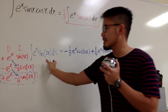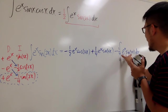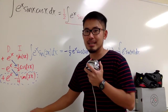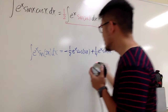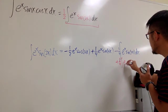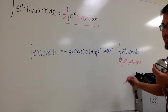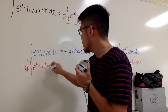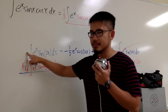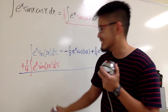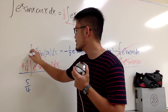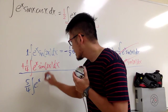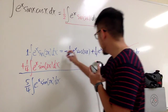That integral part repeats, so I'm going to add 1 over 4 of this integral on both sides. Those terms cancel out. On the left side, 1 plus 1 over 4 gives 5 over 4. So we have 5 over 4 times the integral of e to the x times sine of 2x dx equals the expression on the right.